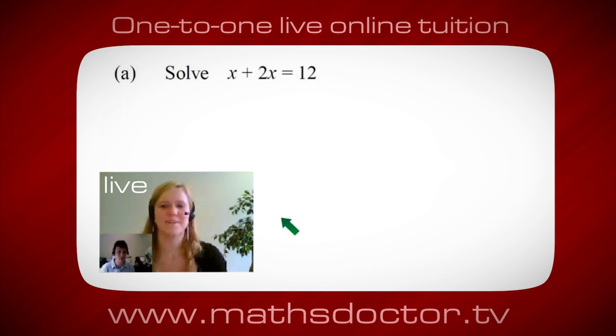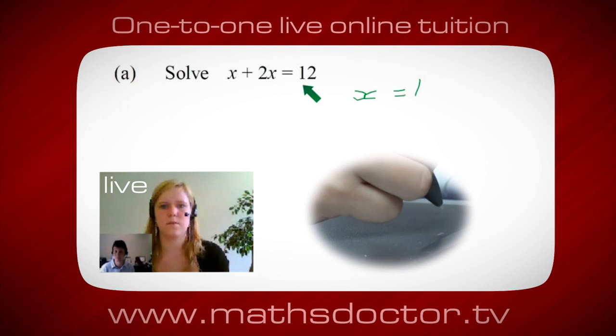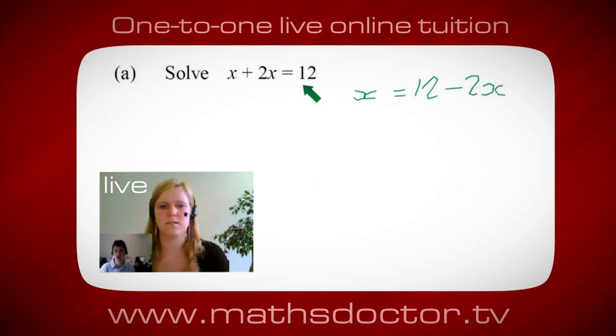Okay, so let's have a look at this one. So solve x plus 2x equals 12. So what do you think you do first? Okay, well I want x on its own so I would put x equals 12 minus 2x.